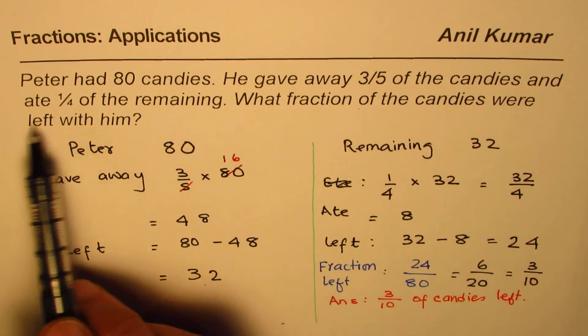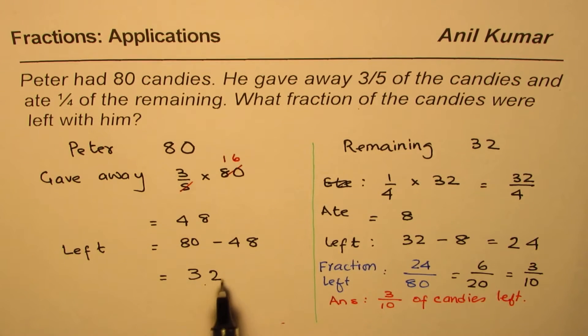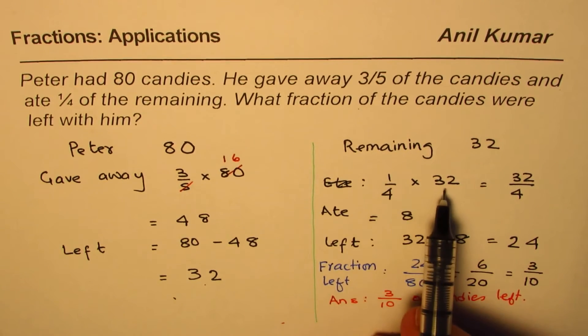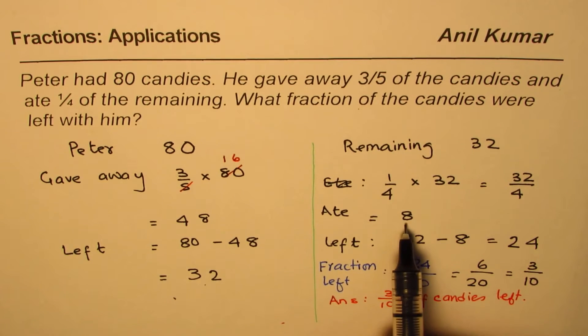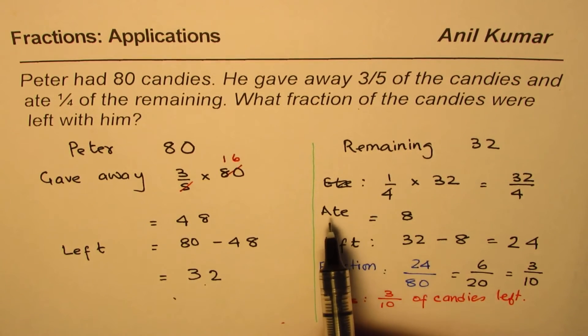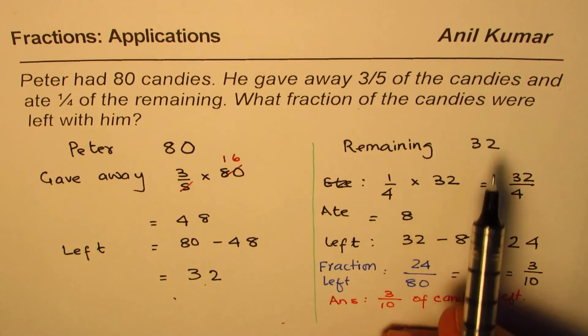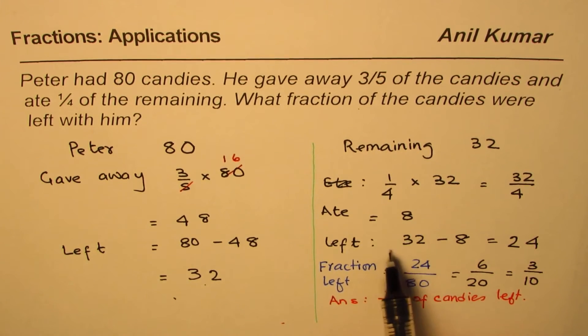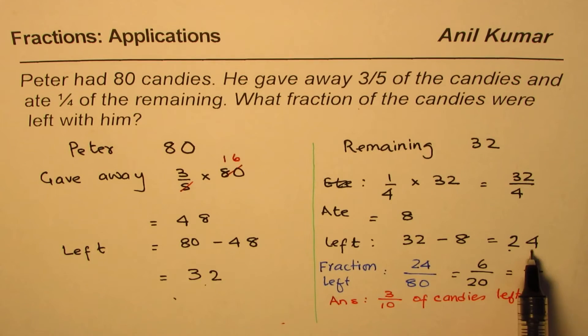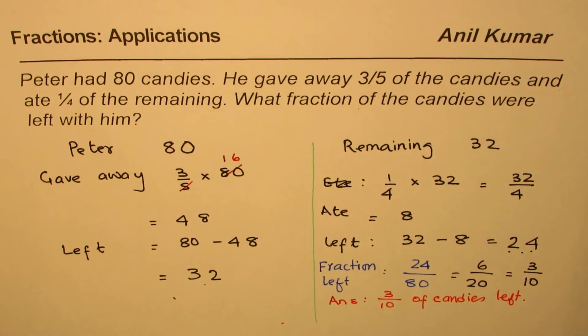And he ate 1/4 of the remaining. So out of 32, he ate 1/4. 1/4 of 32, half is 16, half of 16 is 8. So he ate 8. So out of 32, he ate 8. So the total number of candies left is 24. That 24 is actually from 80 candies.